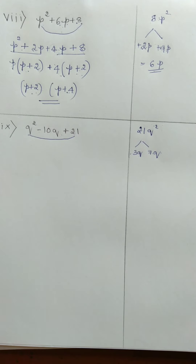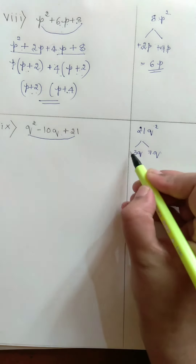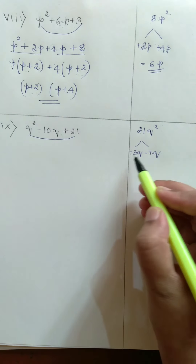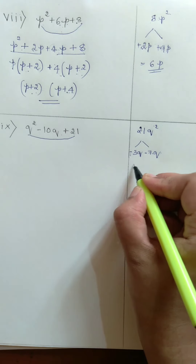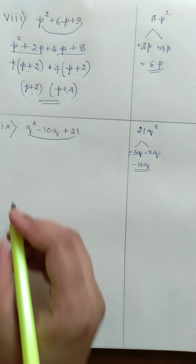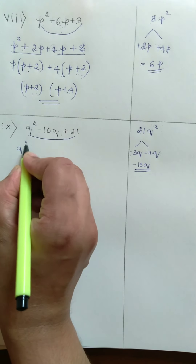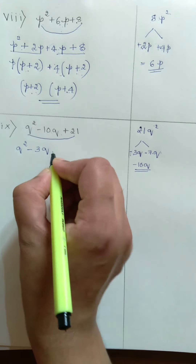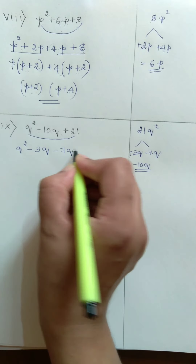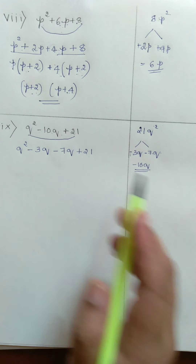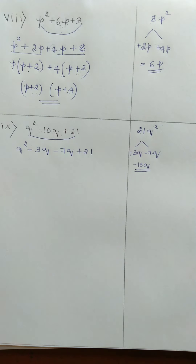To get minus 10Q, let us put negative signs on both factors. Minus 7Q minus 3Q gives minus 10Q, which is the required middle term. Therefore, the next step is Q squared, and in the place of minus 10Q, substitute minus 3Q minus 7Q plus 21. We now have 4 terms to group into 2 groups of 2 terms each.